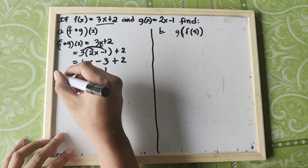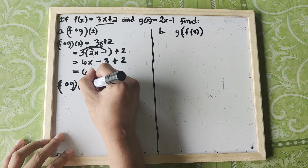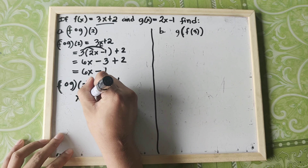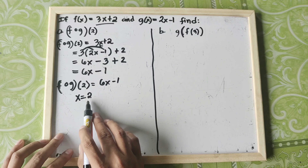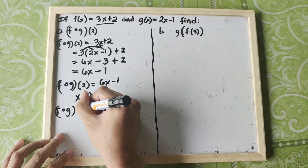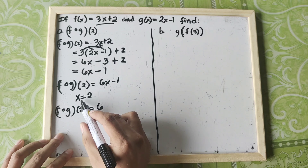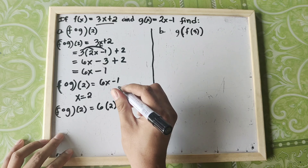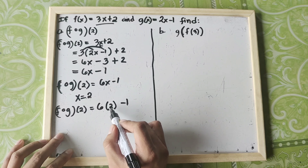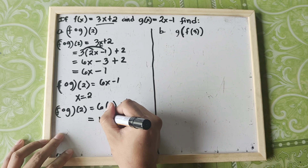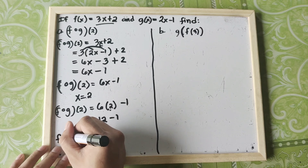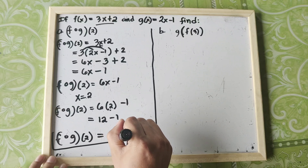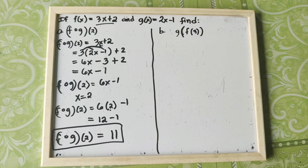Now we evaluate at X equals 2. F composed with G of 2 is equal to 6X minus 1. Substitute X with 2: 6 times 2 is 12, copy negative 1. Therefore, our F composed with G of 2 is equal to 12 minus 1, which is 11. This is the combination of composition of functions and evaluation of functions.